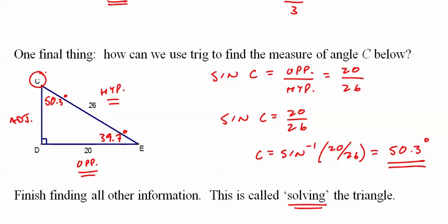And then, if we do anything, I mean, we could do tangent of 39.7 to get the adjacent, we could do cosine of 50.3. Personally, I like to do the Pythagorean theorem. Find that X is 16.6.